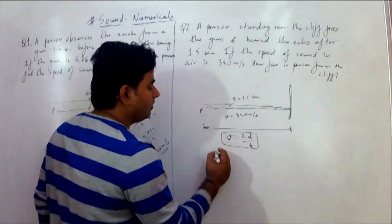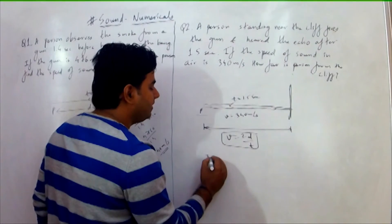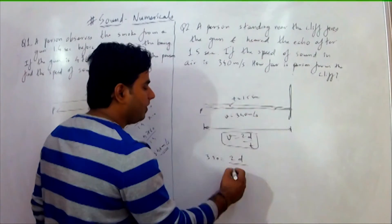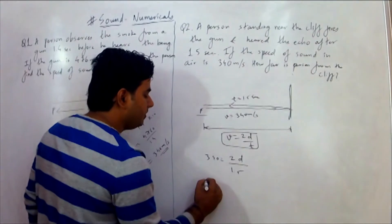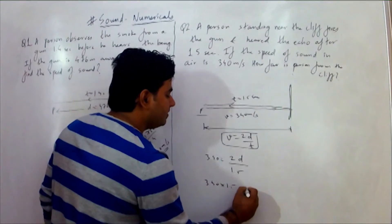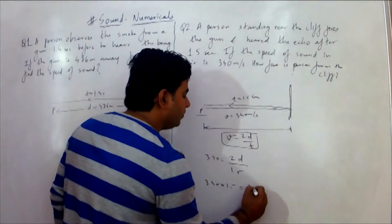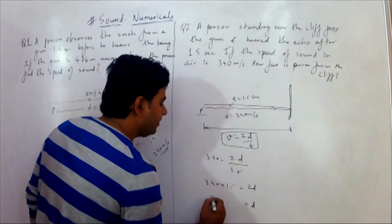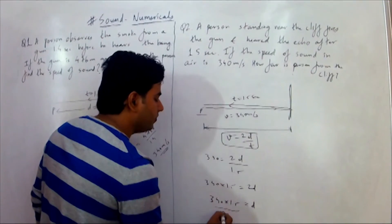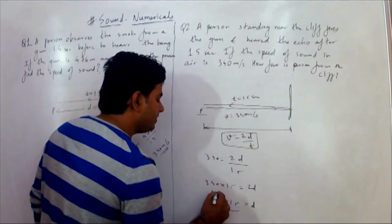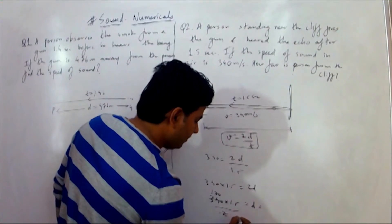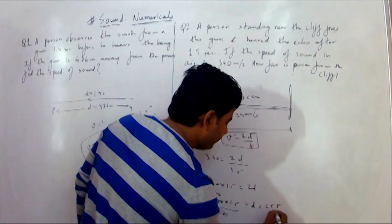So: speed 340 is equal to 2d upon t, which is 1.5. This gives us 340 into 1.5 is equal to 2d. Therefore d equals 340 multiplied by 1.5 divided by 2, which gives around 255 metres.